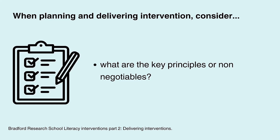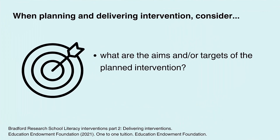To ensure a climate where both children and those implementing the intervention feel purposeful and motivated, ensure that all those involved are aware of the purpose and aims. Where the aims are longer term, it may be helpful to set clear and achievable short-term wins by breaking long-term aims or targets into more measurable and manageable targets — what will the child be able to do, how much, and by when? Take time to consider the number of children involved in the intervention. The EEF found that on average, the smaller the group, the greater the impact. Groups of two have slightly higher impact than groups of three, but slightly lower impact compared with one-to-one tuition.